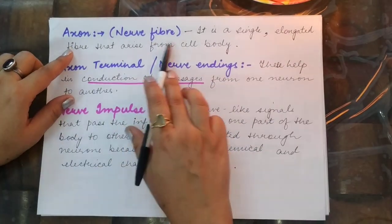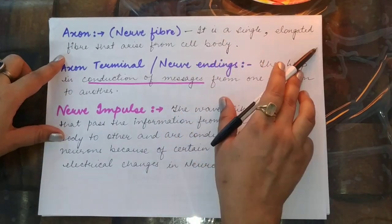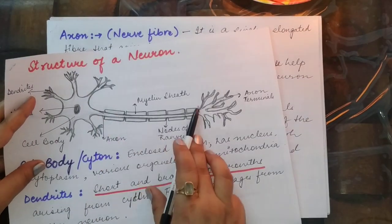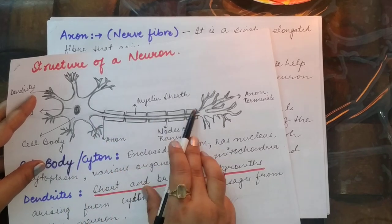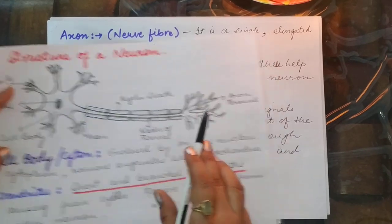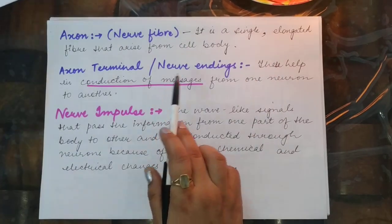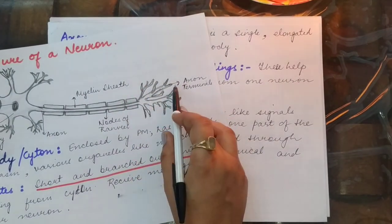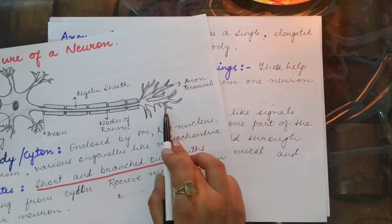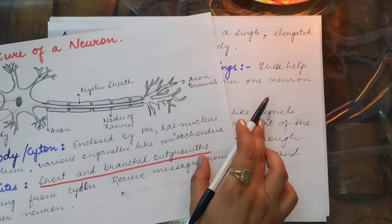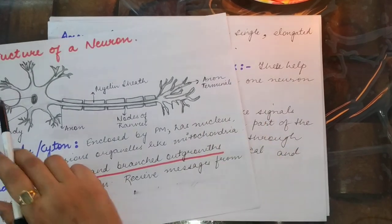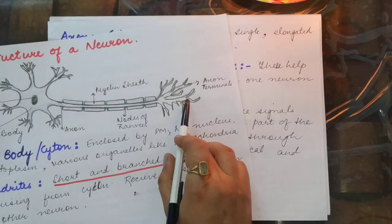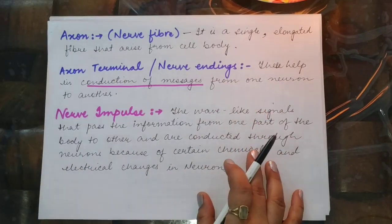The axon is a single elongated fiber arising from the cytone and carries information. The axon terminal helps in conduction of the impulse. Dendrites are the receiving structures and axon terminals are the conducting structures.